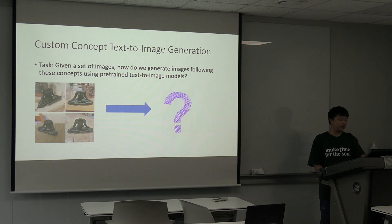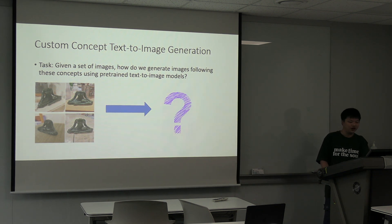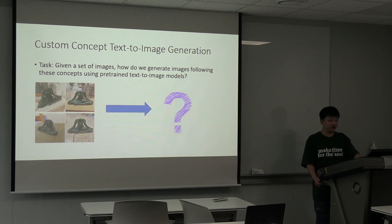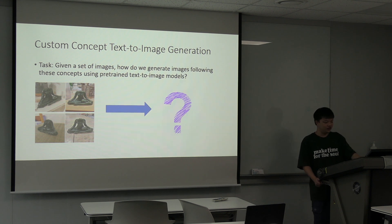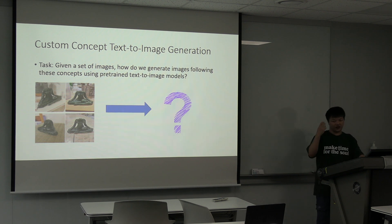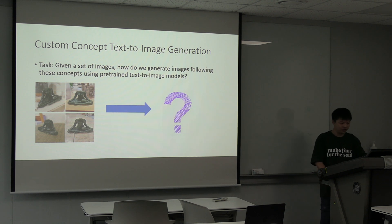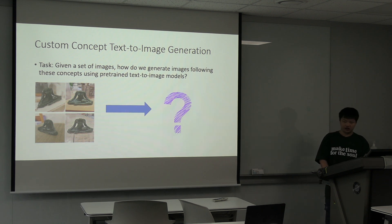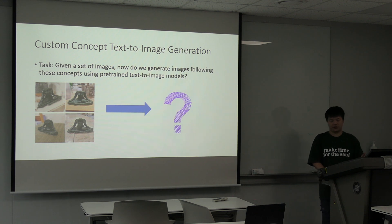Today I'll be interested in the concept of custom concept text-to-image generation. What this task essentially is: given a set of images, how do we generate images following text prompts that obey these concepts? As can be seen here, given these four sets of images, how can we, given another text-conditional prompt, generate a new set of images?